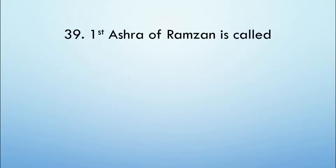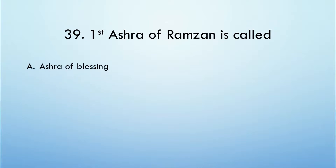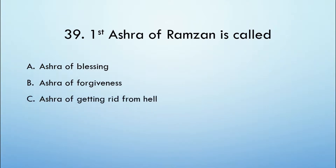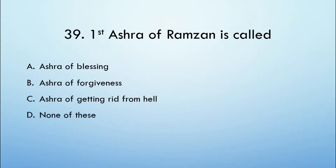First Ashra of Ramzan is called: Option A: Ashra of Blessing. Option B: Ashra of Forgiveness. Option C: Ashra of Getting Rid from Hell. Option D: None of these. The correct option is Option A, Ashra of Blessing.